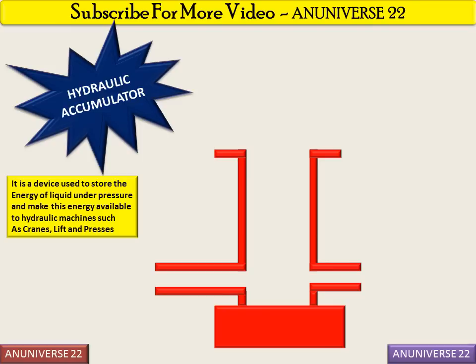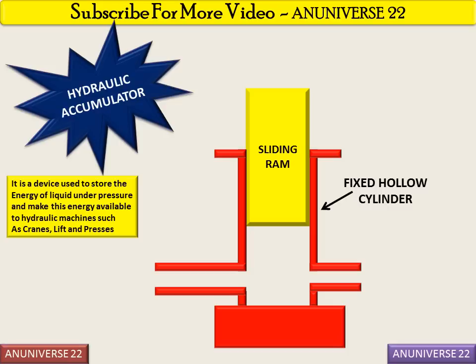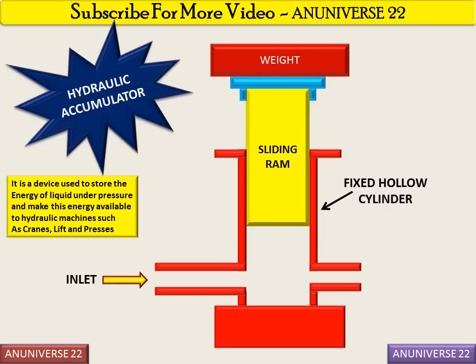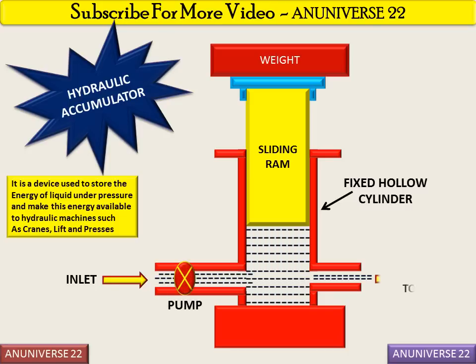A hydraulic accumulator consists of a vertical cylinder which is fixed in position, known as a fixed hollow cylinder. A ram is fitted in the cylinder — this is the sliding ram which carries a heavy weight on its top. The cylinder is provided with an inlet, outlet, and a pump, as shown in the figure.